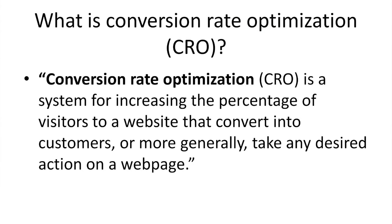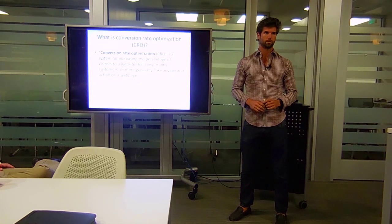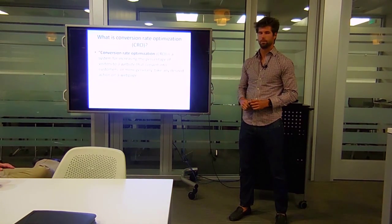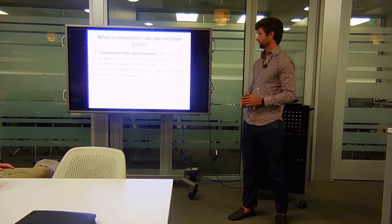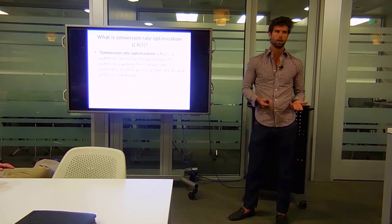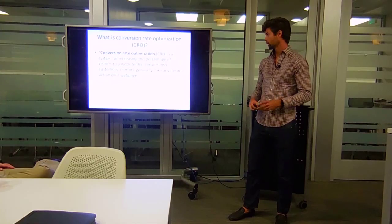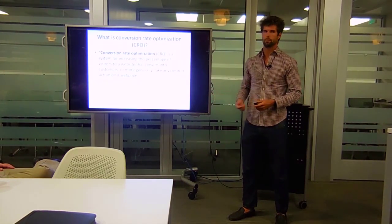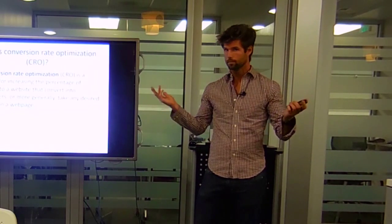Here's the boring definition. What is conversion rate optimization, CRO? Conversion rate optimization is a system for increasing the percentage of visitors to a website that convert into customers, or more generally, take any desired action on a webpage. I don't like a couple things about this definition. Everything in marketing has to be a three-letter acronym, which is obnoxious. I think website optimization is more correct. Really, it's getting people to go to your website and do the things you want them to do.